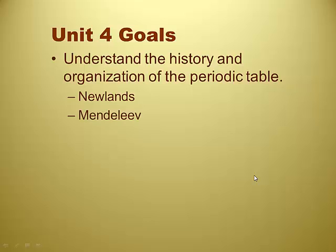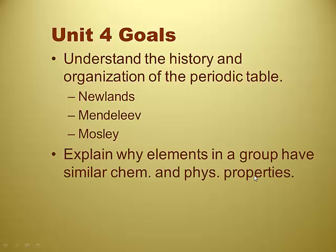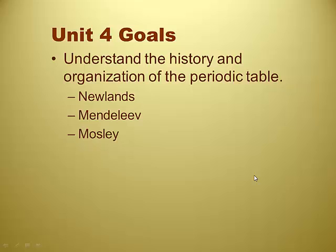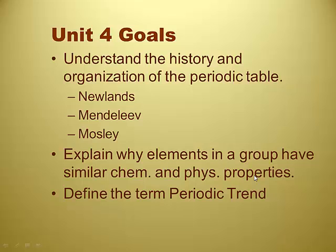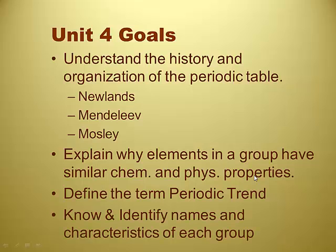According to John Newlands, Dmitry Mendeleev, and a guy by the name of Mosley. So these three guys are the main characters, right? Because there are other secondary characters with the Periodic Table, but these guys are the main ones you've got to know. Explain why elements in a group have similar chemical and physical properties — there's actually a reason for that. Define the term Periodic Trend, and know and identify the names and characteristics of each group, slash family. We kind of interchange the name group and family, so don't panic. It is the same thing.